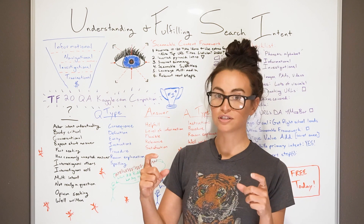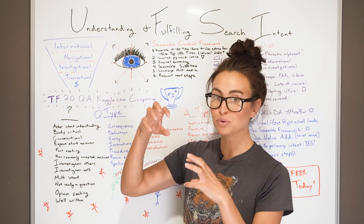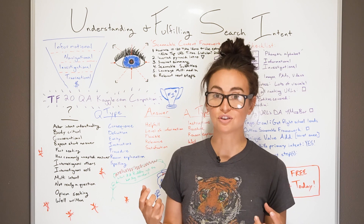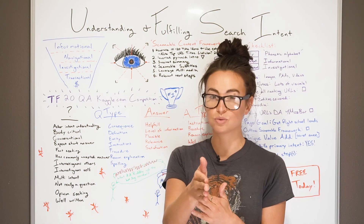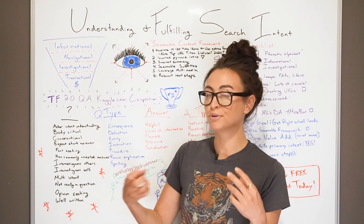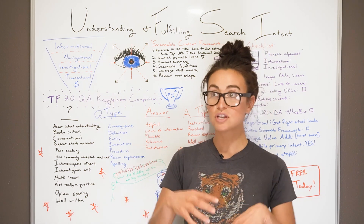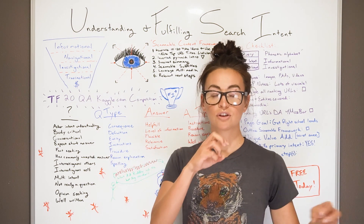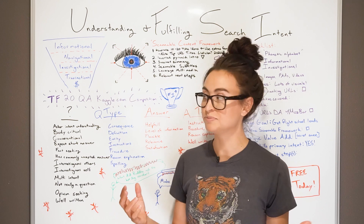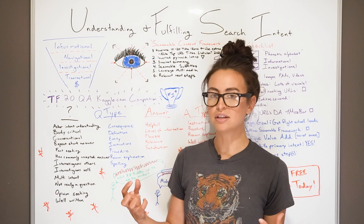Is there a featured snippet? Is there a knowledge graph? You can pull that sort of information. Are there site links — is it navigational in nature, people just trying to go to one destination? Is there comparison tables — are they perhaps investigating? Transactional: are there tons of ads, lots of product pages showing up in results, is there a shopping carousel? You can pull intent types directly from the search.